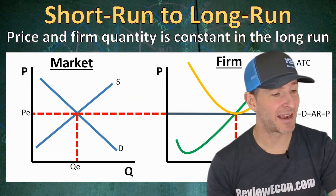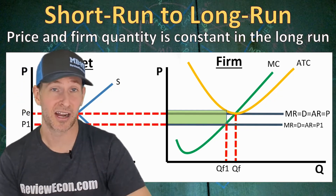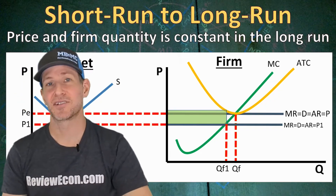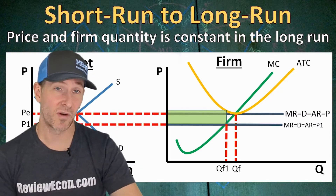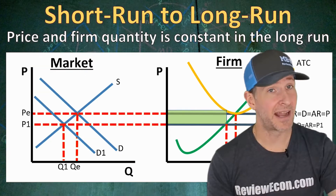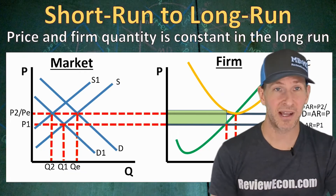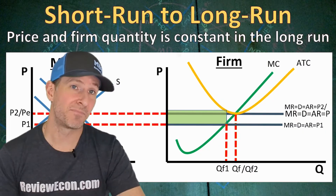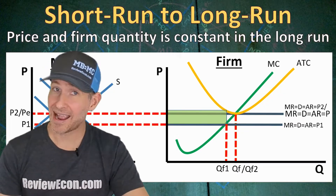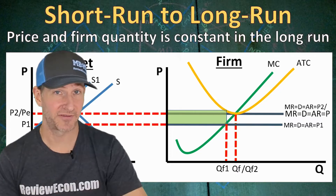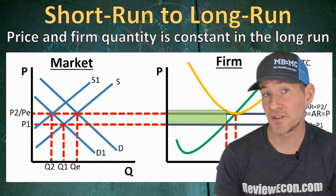If we go back to the beginning again and this time we have a decrease in demand, that's going to cause the firm to earn economic losses in the short run as the marginal revenue, demand, average revenue, and price shift downward. The firm is now earning economic losses and producing a lower quantity of output in the short run. But now firms are going to exit the market as they flee the economic losses. That shifts the supply curve to the left, driving the price back where it was before. So in the long run, the price remained at PE and the firm's quantity of output remained at QF. In the market, however, we are producing lower quantities of output because we have fewer firms producing.